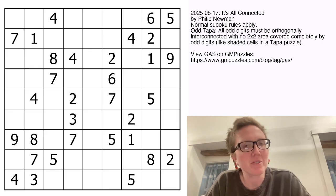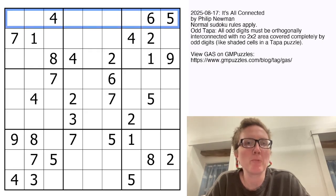What does that mean? We have normal sudoku rules, so placing the digits one through nine once each in each row, each column, and each outlined three by three region.